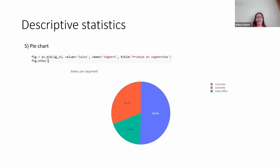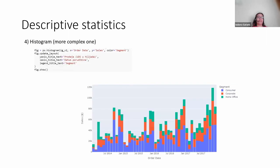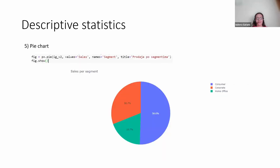Pie charts — I don't recommend them. I know that probably I'm the only analyst who dislikes pie charts, but I need to give you an example of this too. Pie charts are very easy to create and very often used. You can present them with percentages or with absolute values, but in my opinion, a bar chart is more readable and has more meaning than a pie chart — but of course you can use whatever is a good fit for your report.